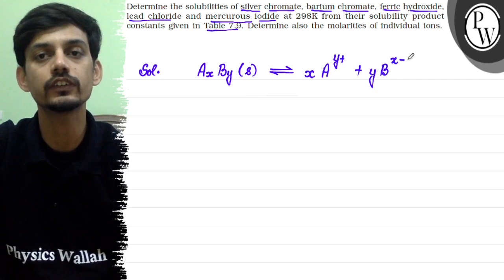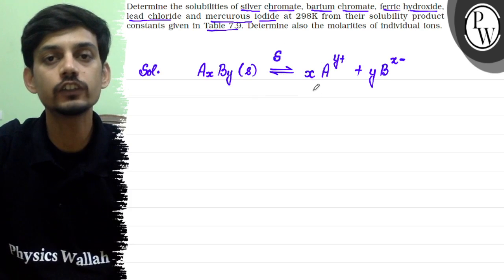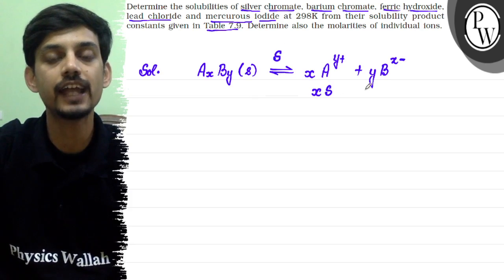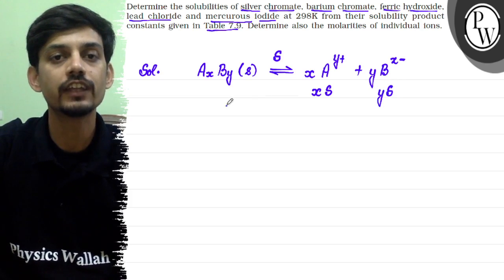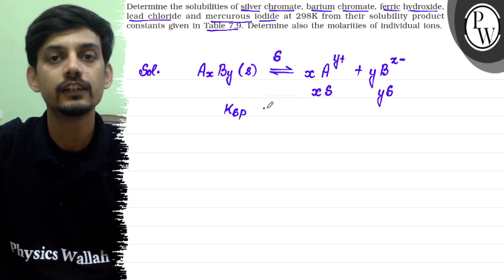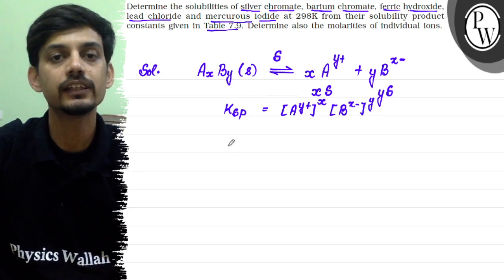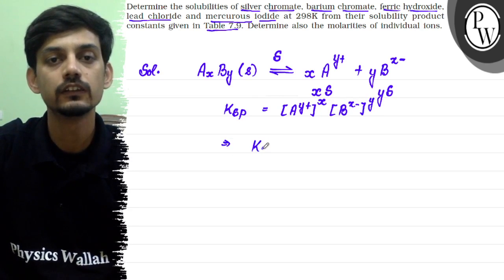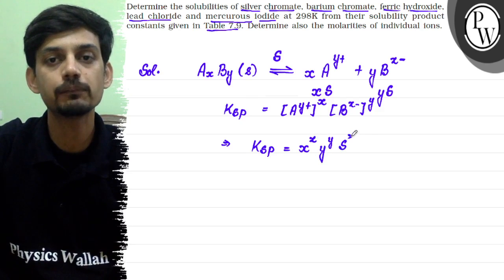The valency and coefficients both cross. According to stoichiometry, if the solubility of the salt is S, the concentration of A ion will be S times X, and the concentration of B ion will be Y times S. The KSP expression becomes X^X times Y^Y times S^(X+Y).